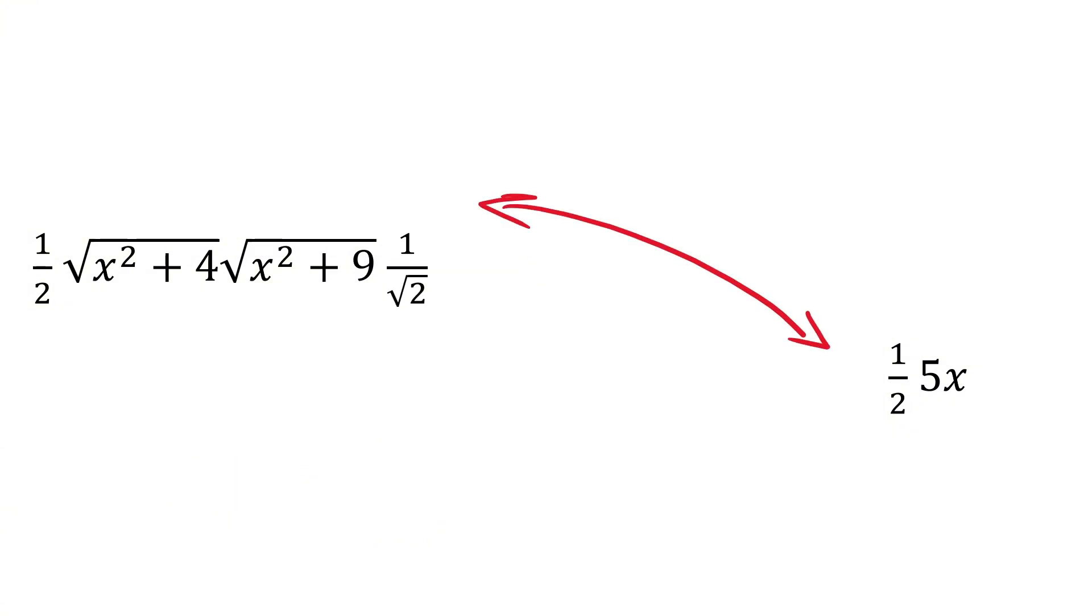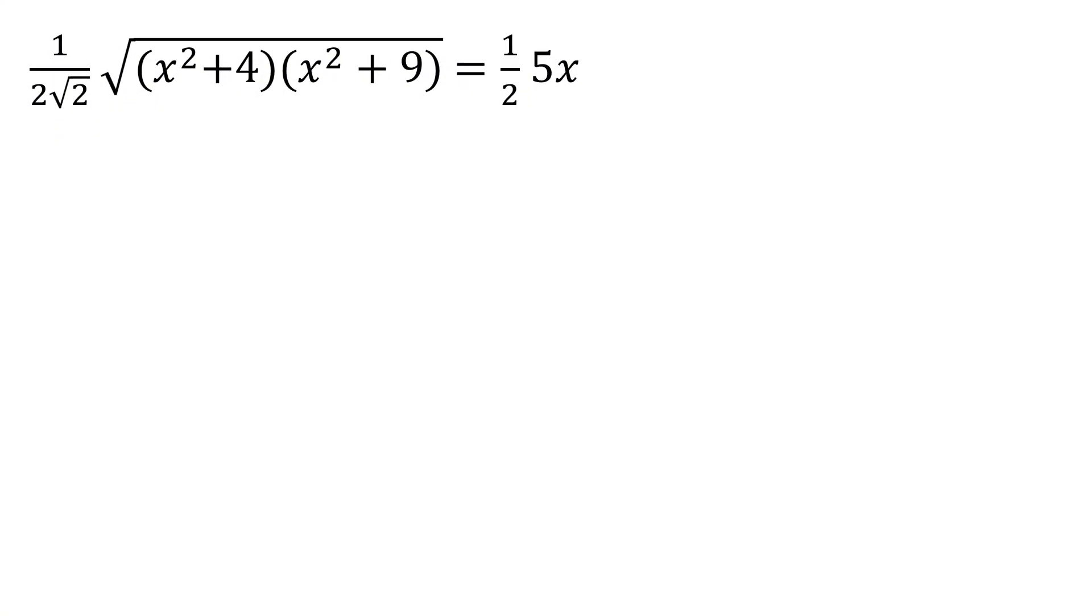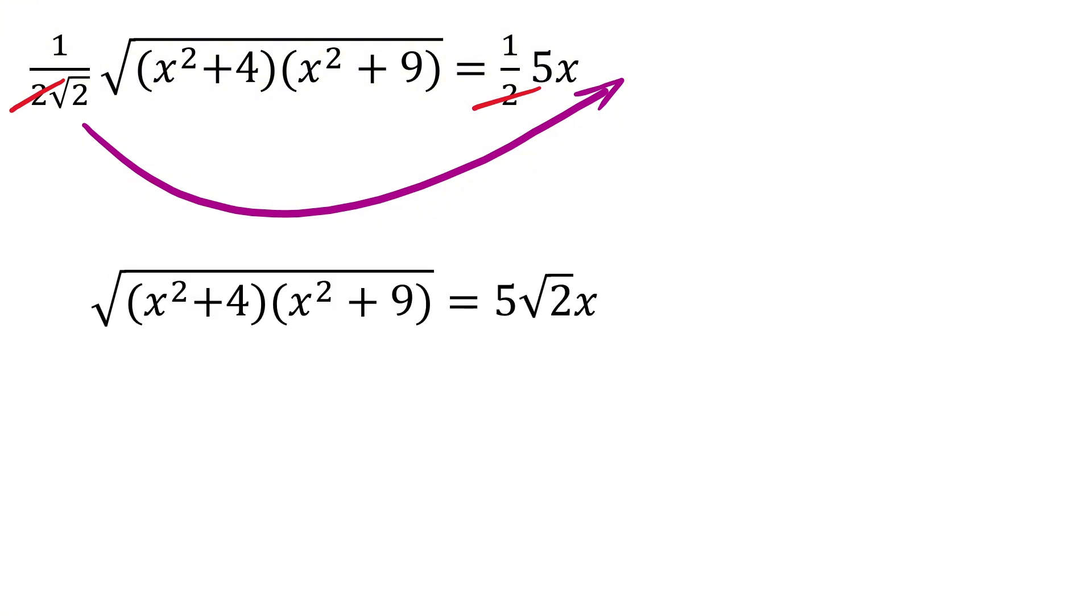Since both of them are equal to the area of this triangle, therefore, equate them to get this. First, cancel out these two from both sides. And then, take root to this side like this. Now, square both sides to remove this square root.